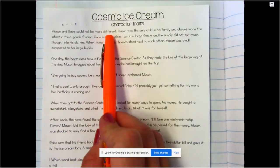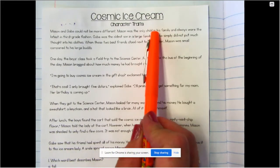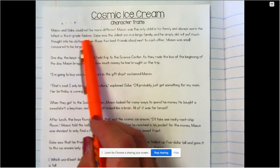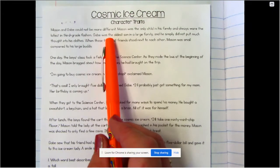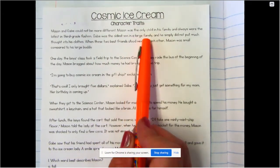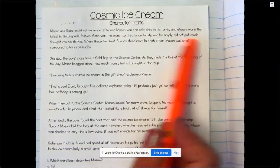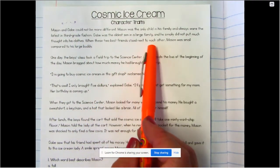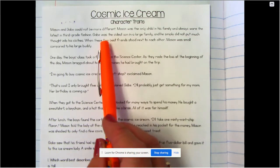Mason and Gabe could not be more different. Mason was the only child in his family and always wore the latest in third grade fashion. Gabe was the oldest son in a large family and he simply did not put much thought into his clothes. When these two best friends stood next to each other, Mason was small compared to his large buddy.